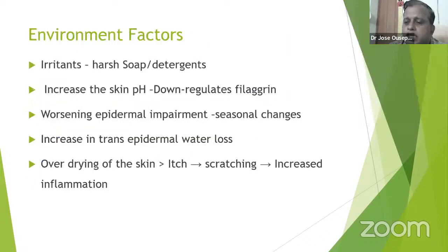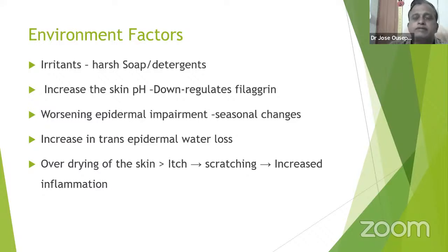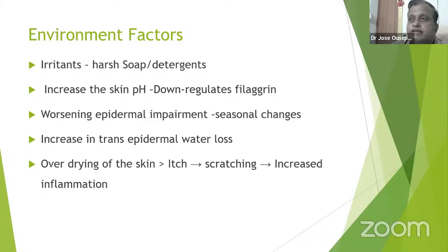Based on this, there are other triggering factors. An atopic individual may not have clinical presentation unless some triggering factor precipitates or exacerbates Atopic Dermatitis. The most important triggering factors are irritants in the form of harsh or alkaline soaps or detergents, which disrupt the skin barrier, increase skin pH, and downregulate filaggrin. Seasonal changes also worsen the epidermal environment, leading to epidermal hydration changes and increased transepidermal water loss.